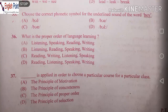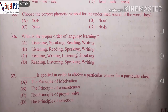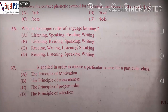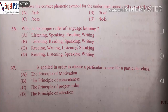Which principle is applied to choose a particular subject for a particular class? The options are: A) principle of motivation, B) principle of concreteness, C) principle of proper order, D) principle of selection. D is the right answer. The principle of selection is applied in order to choose a particular course for a particular class.